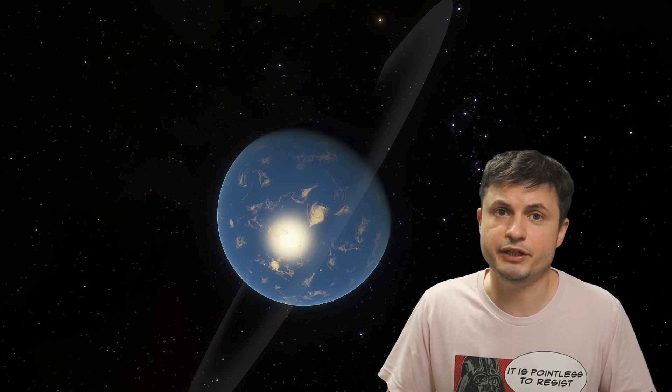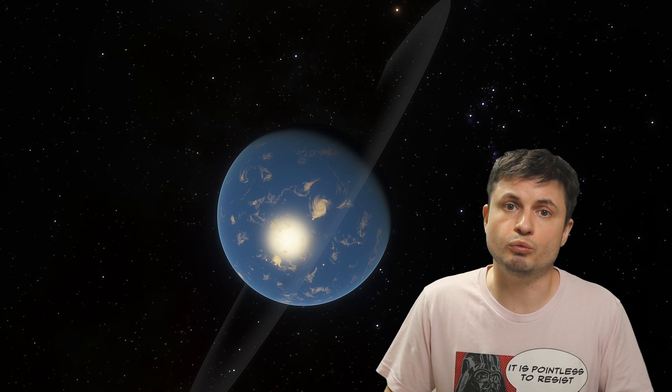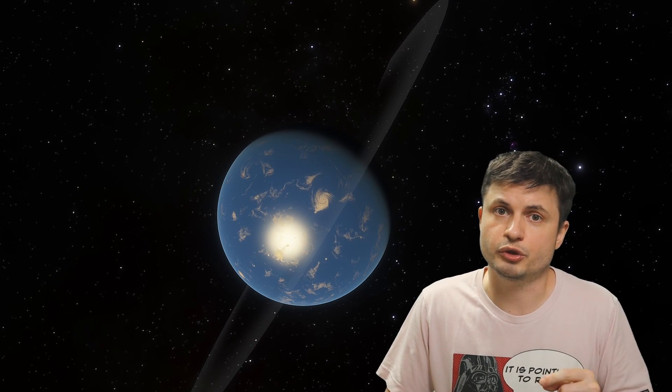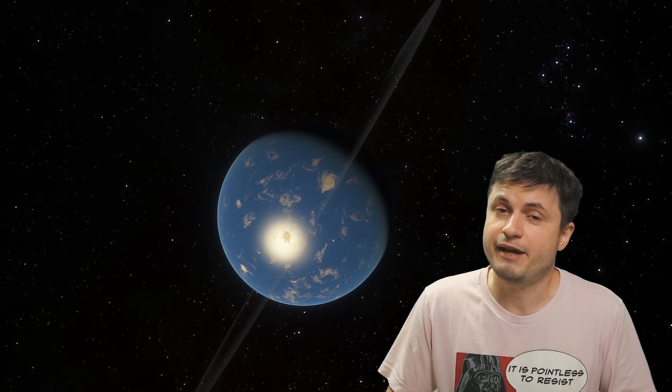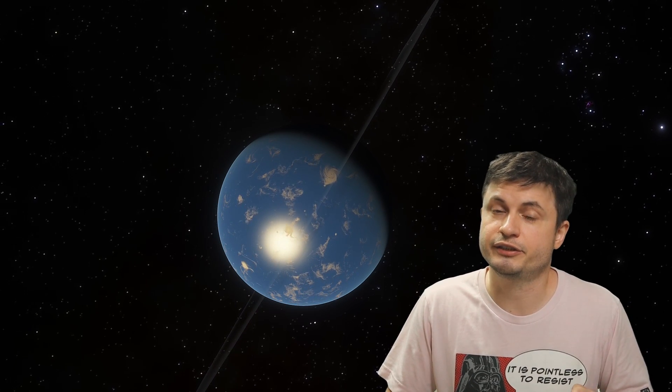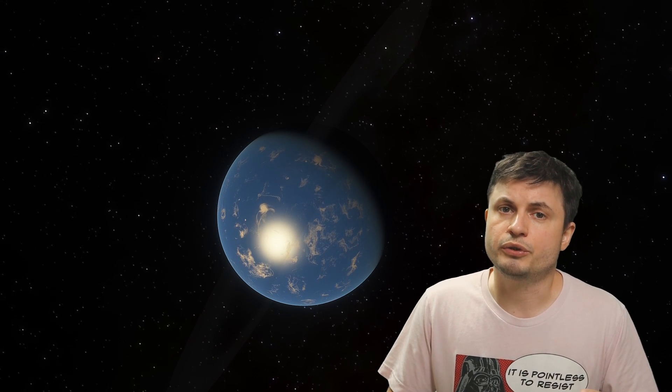But anyway, until we actually confirm the existence of these planets with some of the future observations, and until we actually know what they're made out of, and what sort of composition they have, there's really nothing else we can do for now. These predictions are still very preliminary, but having another star system with 8 planets is actually kind of exciting. Either way, it's very likely we're going to be returning to Tau Ceti once a new study comes out, either proving or disproving these findings.